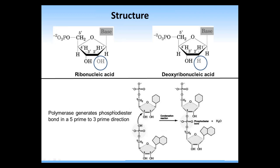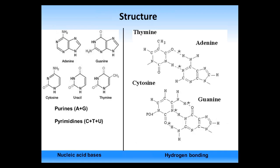Polymerase generates a phosphodiester bond, always in a five prime to three prime direction, through a condensation reaction which links the two ribose molecules resulting in a byproduct of water. The base pairs found in RNA and DNA include purines, made up of two nitrogen-based rings — adenine and guanine — and pyrimidines, which are single nitrogen-based rings, including cytosine, uracil, and thymine. Thymine is only found in DNA, whereas uracil is found in RNA.